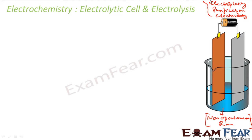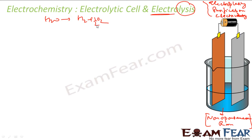If you look at the word 'electrolysis' — 'electro' refers to electrons or electricity, and 'lysis' means to break — so we are using electricity to break a chemical. For example, water will not break into hydrogen and oxygen on its own, but if you pass electricity and do electrolysis of water, you can actually break water into hydrogen and oxygen.